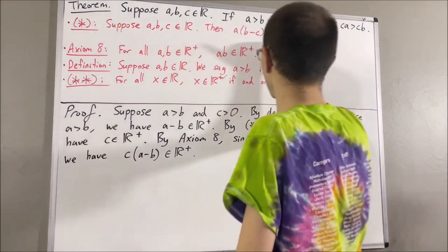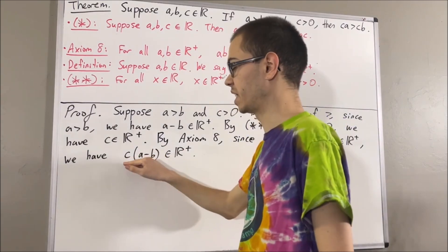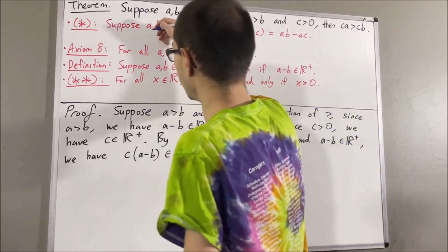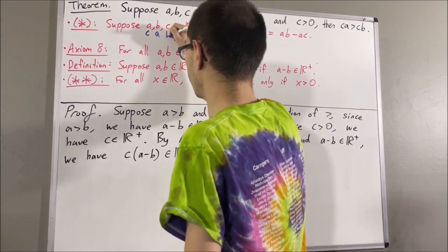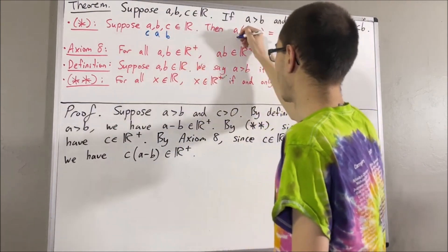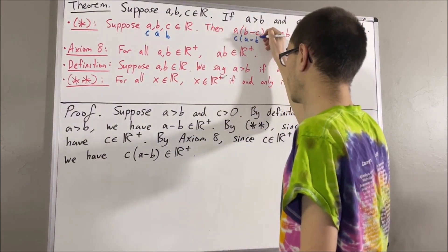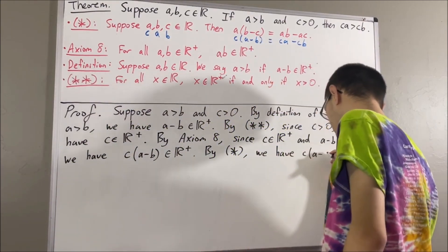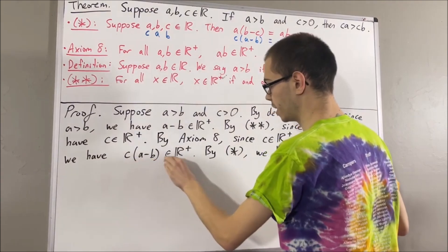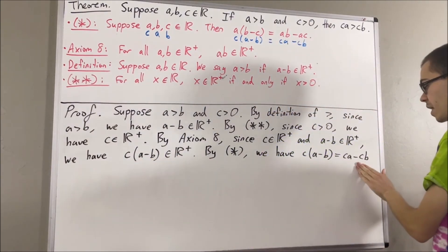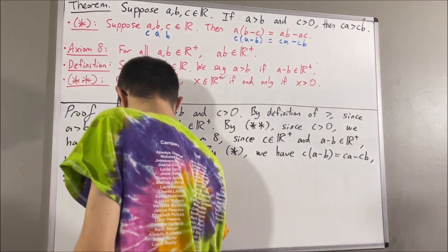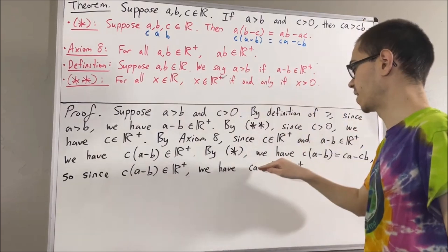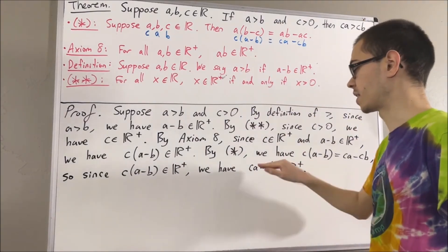And then, by our preliminary result star, we have C times A minus B is equal to CA minus CB. So, since C times A minus B is a positive real number, this tells us that CA minus CB must be a positive real number. And then, by the definition of greater than, since CA minus CB is a positive real number, that tells us CA is greater than CB.